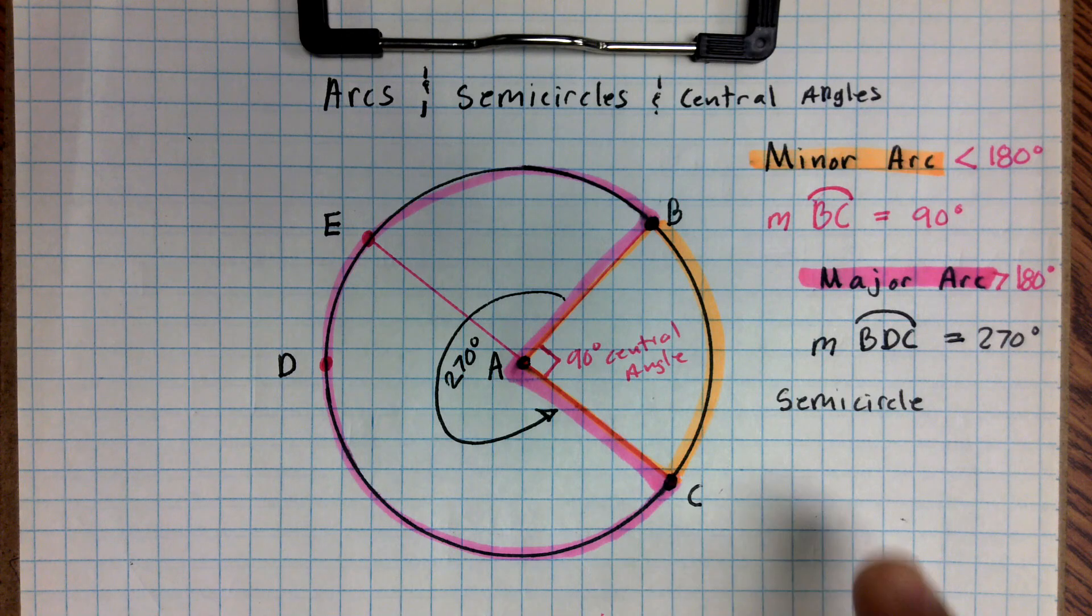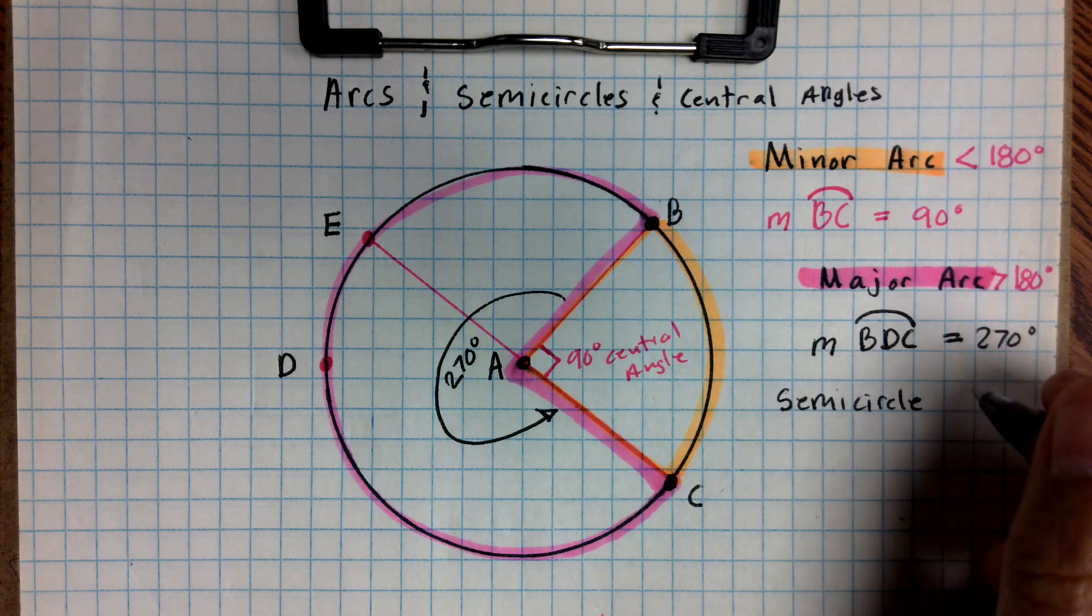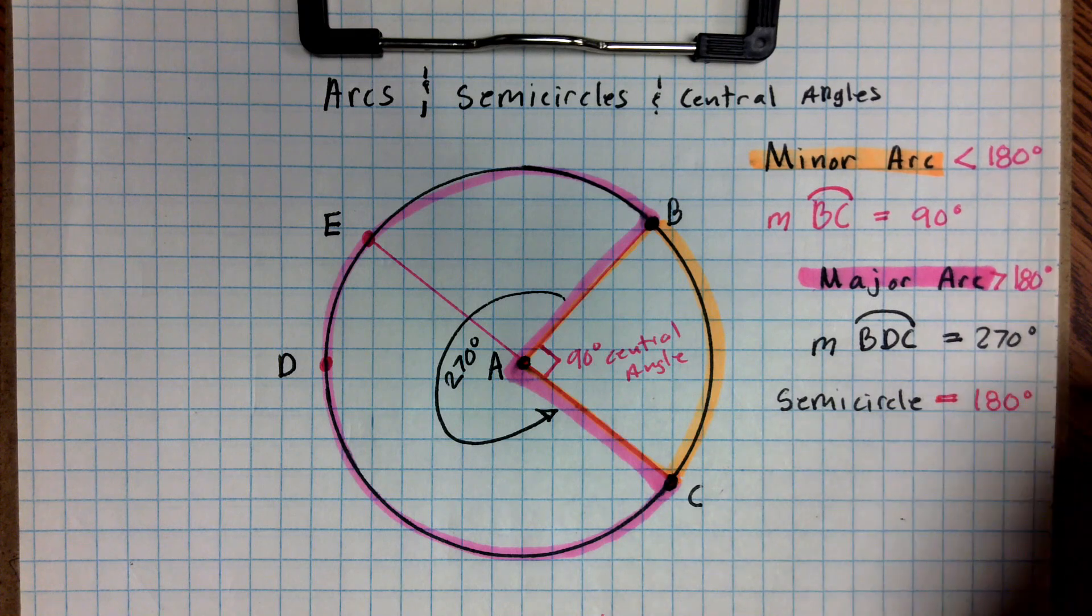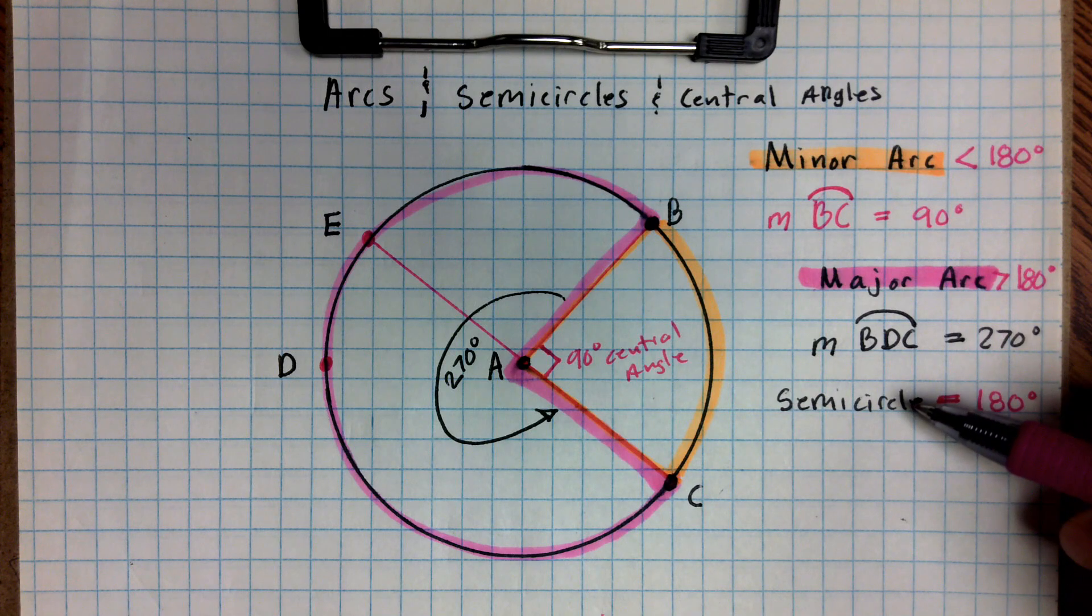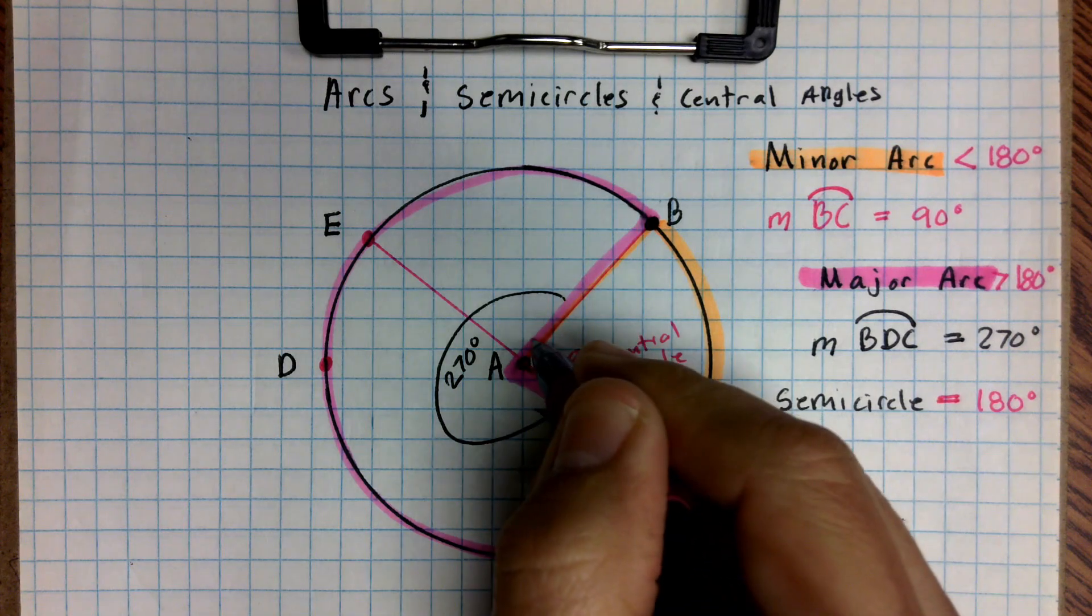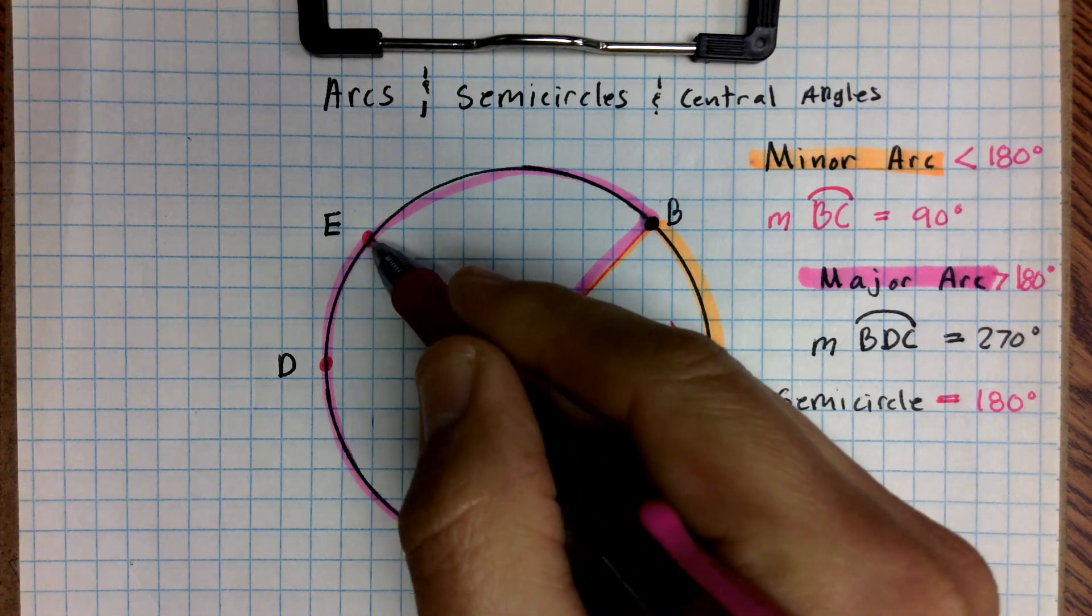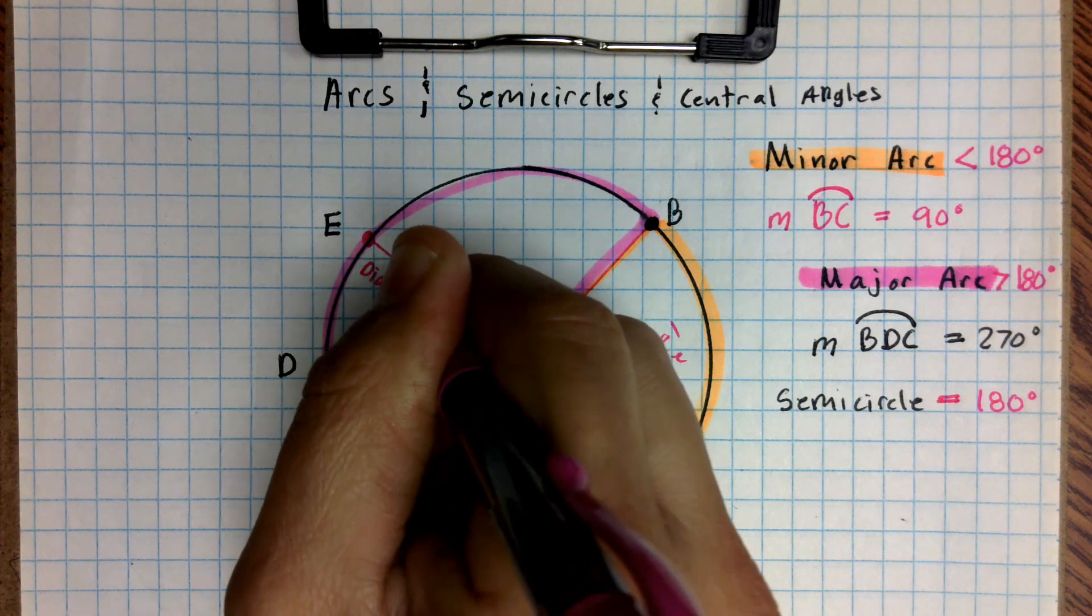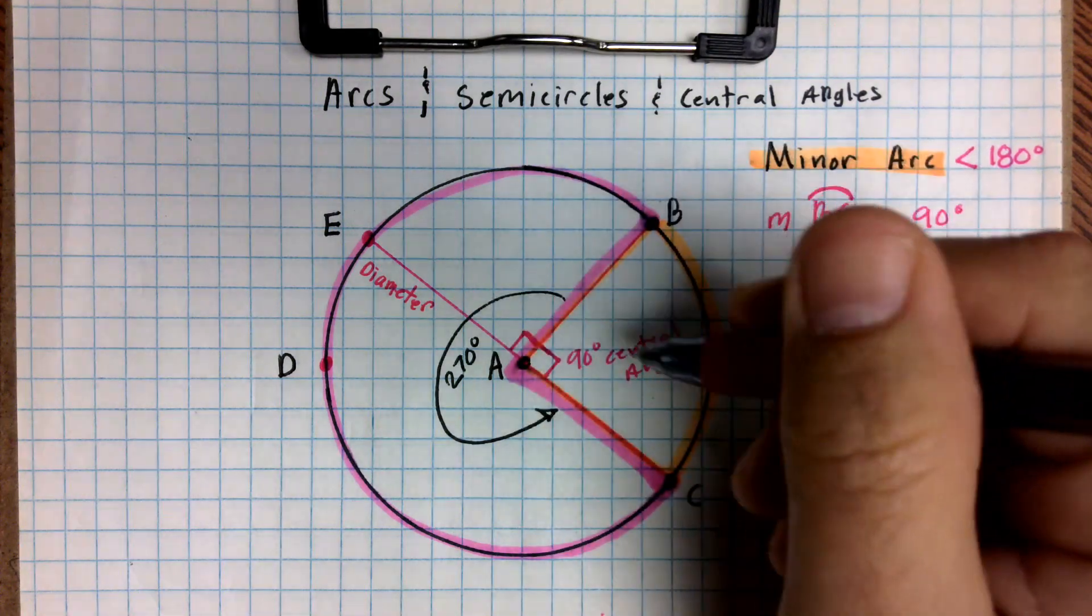And now we have a semicircle, which is a special situation. When we talk about a semicircle, we're talking about an angle that is actually equal to 180 degrees. So it can't be greater than, and it can't be less than, but when it's equal to 180 degrees, we call it a semicircle. For example, this is a 90 degree angle here. That means that this opposite side is also a 90 degree angle because E to C is a diameter. So I'm going to write that line, E to C, is a diameter.